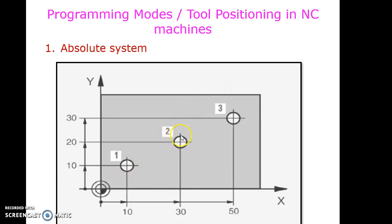In the absolute system, every value for any particular position is taken from the absolute origin. So for drilling at position two, the input is X=30, Y=20. For position three, the input is X=50, Y=30. This is how absolute system programming works, and you will learn more while developing part programs.